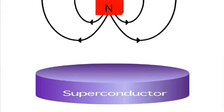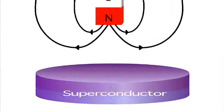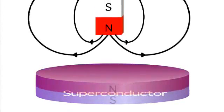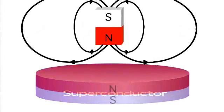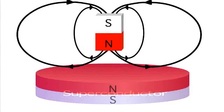To the magnet, the superconductor looks like another magnet with an opposite magnetic field, or pole. So the magnet is repelled from the superconductor.